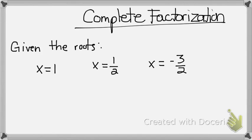To actually write them out in factored form is simply like going backwards, basically trying to make them equal 0. So in this first one, x equals 1, in order for this to equal 0, I'll subtract 1 from both sides, and then I'm left with x minus 1 that will equal 0.